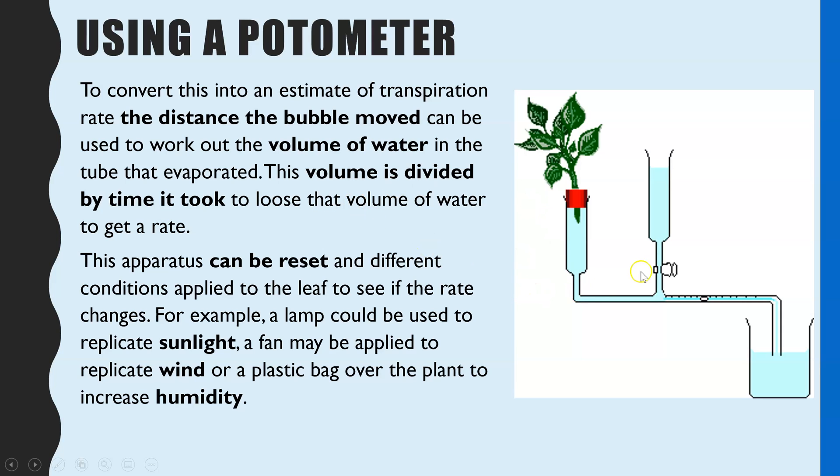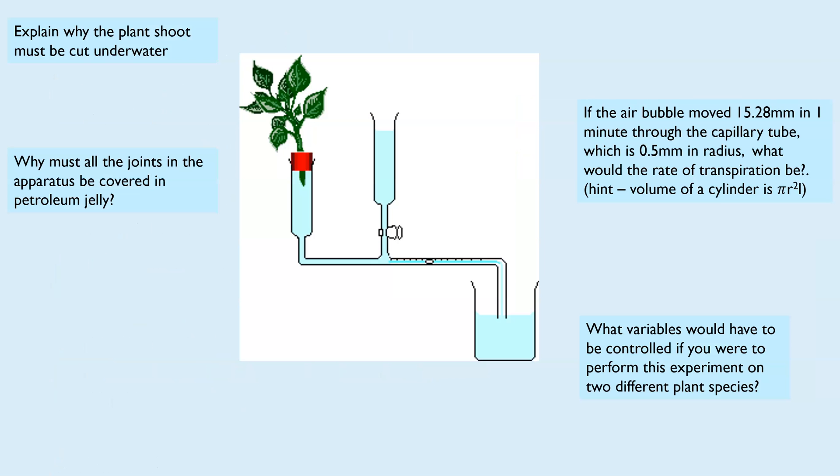You can reset the apparatus, and that is the purpose of this reservoir of water. This tap is closed when you're doing the experiment, but if you open this tap, that allows water from this reservoir to move into the capillary tube and it then pushes that air bubble. You can leave it flowing so it pushes the air bubble all the way out or just back to the start, then close the tap and restart the experiment so you can get multiple repeats.